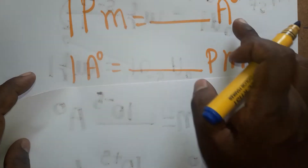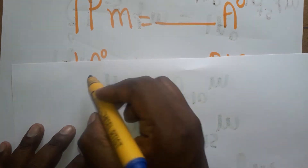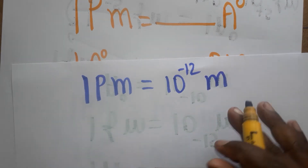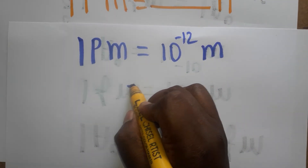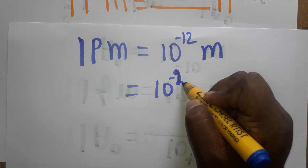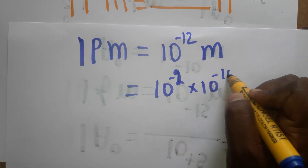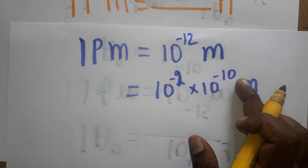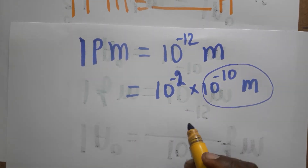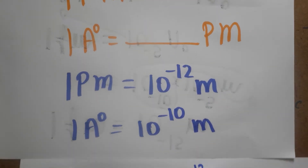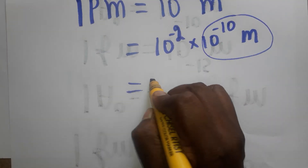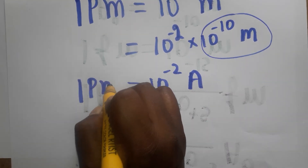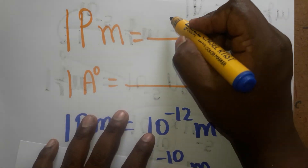Now I am going to convert from picometer to angstrom unit. One picometer is equal to 10 power minus 12 meter. We can write 10 power minus 12 as 10 power minus 2 into 10 power minus 10 meter. Since 10 power minus 10 meter is one angstrom unit, this gives us 10 power minus 2 angstrom unit is equal to one picometer.